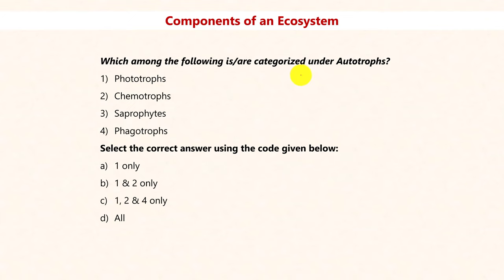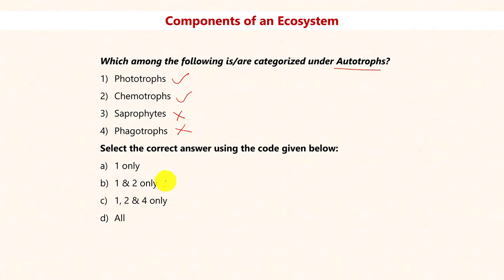Which of the following are categorized as autotrophs? Autotrophs are ones which can prepare their own food. Phototrophs (like plants using photosynthesis) and chemotrophs (which rely on chemicals in the medium) are autotrophs. Saprophytes rely on dead and decaying matter, and phagotrophs are heterotrophs. The answer is 1 and 2 only.